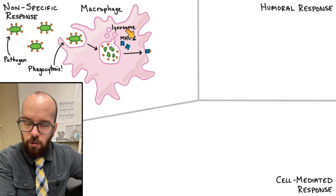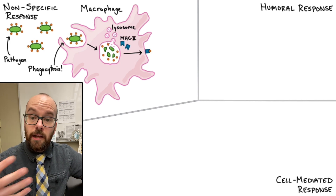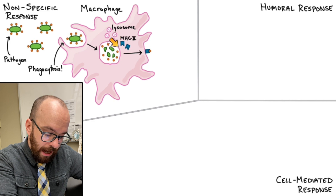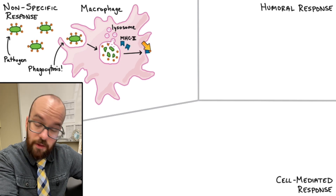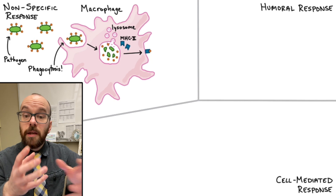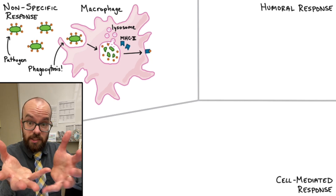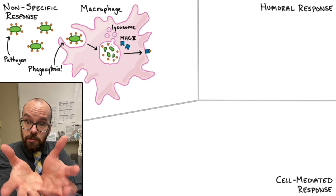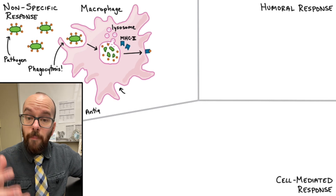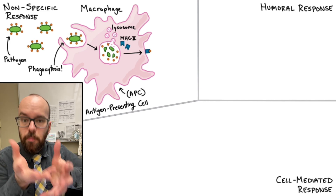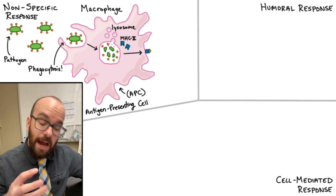The macrophage has a specialized protein called MHC2, or Major Histocompatibility Complex 2. That MHC2 protein grabs onto some of those antigens and presents them on the surface of the macrophage. Because it's presenting the antigen — essentially saying 'here's how you recognize this pathogen' — we call the macrophage an antigen presenting cell.